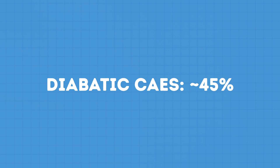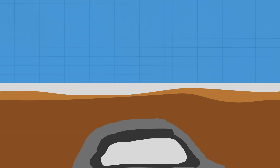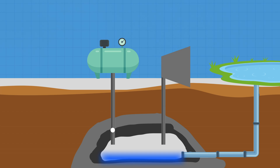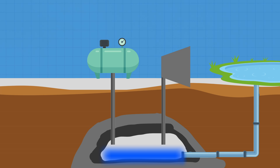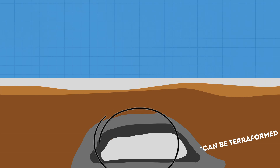Another important step of the process is keeping the cavern at a constant pressure. The way plants do that is by using water. When compressed air flows into the cavern, water is pumped out and stored in a reservoir. When the compressed air goes back out, in order to maintain the pressure, water is pumped in to replace the gaps the air left.